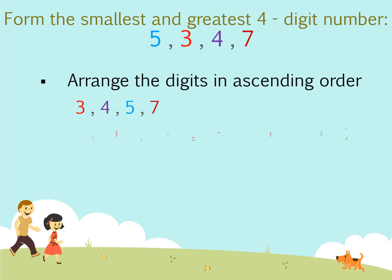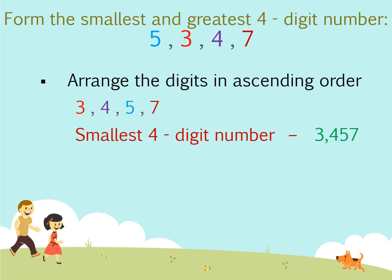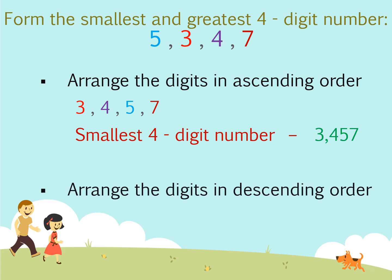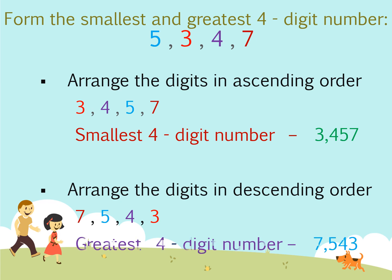Thus we get the smallest 4-digit number as 3457. Now to form the greatest number using these digits, we arrange them in descending order. So we arrange the digits as 7, 5, 4, 3. Here 7 is greater than 5, 5 is greater than 4, and 4 is greater than 3. Thus we get the greatest 4-digit number as 7543.